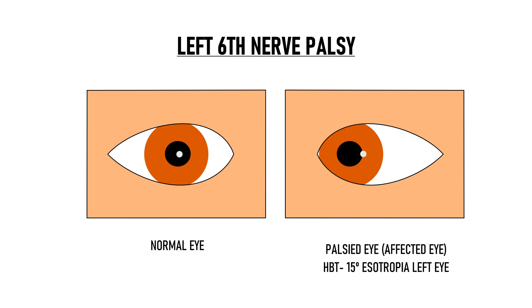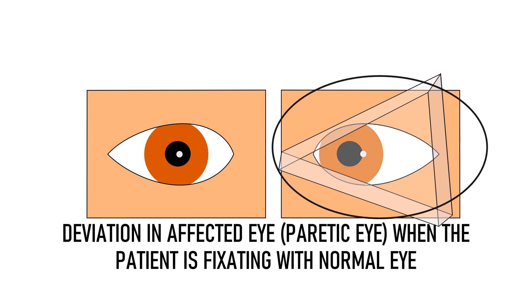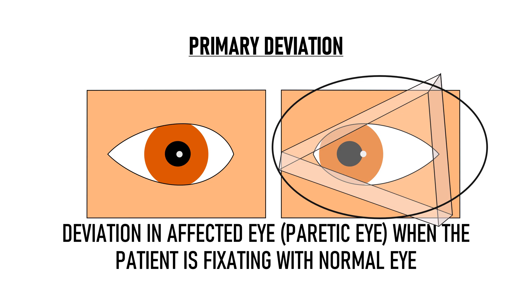If you wish to learn how to perform Hirschberg tests properly, I have already posted a video on this topic — you will find the link in the description box below. So, our patient has 15 degrees of esotropia in the left eye. Now, when we put a prism in front of the left eye and measure the amount of squint, we get a deviation of 35 prism diopters. So, this deviation in the affected eye — that is the paretic eye — when the patient is fixating with his normal eye, is known as primary deviation. In primary deviation, it is the normal eye that is fixating and we are measuring the deviation in the paretic eye, that is the affected eye.